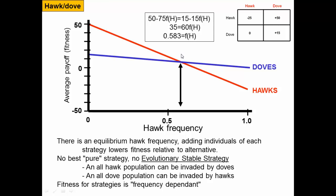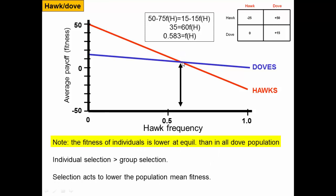The payoffs and how they change depending on frequency will drive the population toward maintaining a mixed set of individuals. You'd expect the population to maintain 58.3% hawks and 41.7% doves — some individuals are hawks, some are doves. You wouldn't get a population where all end up being one or the other for very long. Notably, the fitness of individuals at this equilibrium is actually lower than it would be in a population with no hawks.